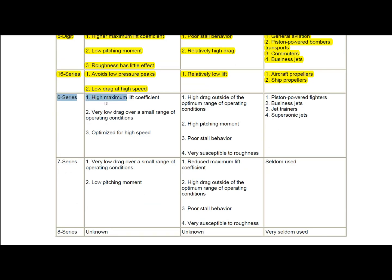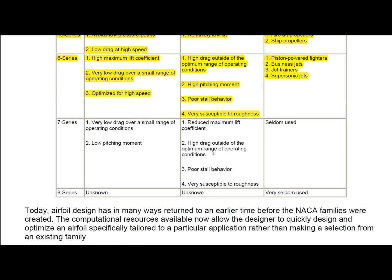NACA 16 series airfoils has avoidance of low pressure peaks, low drag at high speed. But the main disadvantage is it generates relatively low lift and is generally used in aircraft and ship propellers.